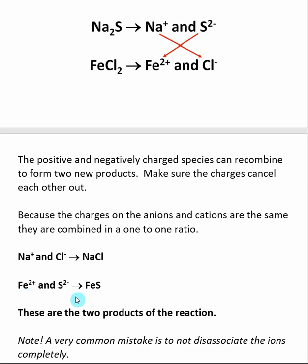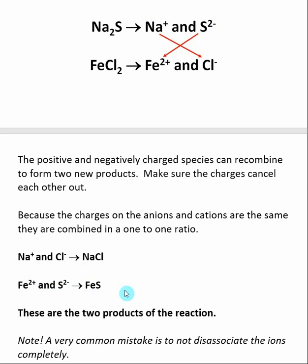With Fe2+ and S2−, their charges are the same magnitude, so they combine to make iron(II) sulfide in a one-to-one ratio. These are our two new products. We have taken the ions from our starting materials, recombined them, and in their recombined form they give us our two products: sodium chloride and iron(II) sulfide.